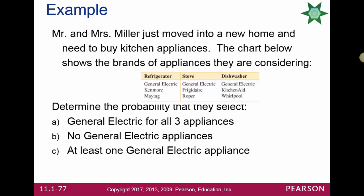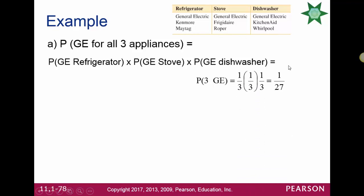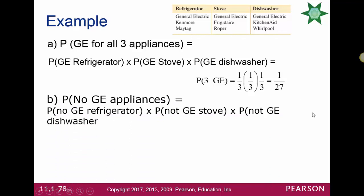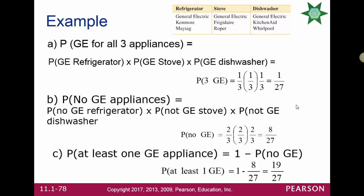Mr. and Mrs. Miller need to buy kitchen appliances — a refrigerator, stove, and dishwasher — each from a brand choice that includes GE as 1 of 3 options. The probability of selecting GE for all three is (1/3)³ = 1/27. The probability of no GE is (2/3)³ = 8/27. The probability of at least one GE appliance is 1 minus the probability of no GE: 1 − 8/27 = 19/27. This concludes the introduction to probability for the first half of Unit 4.